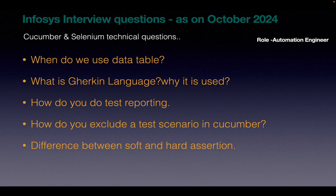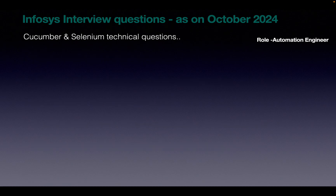How do you do test reporting? You can explain the process — if you are using Extent Reports, you can explain about Extent Reports. How do you exclude a test scenario in Cucumber? To exclude a test scenario, we use the tag @skip. The next question: difference between soft and hard assertion. With soft assertion, if the test fails, the remaining test methods won't get executed. Whereas with hard assertion, the test won't stop — the remaining tests will still get executed. It is more preferred to use hard assertion than soft assertion.